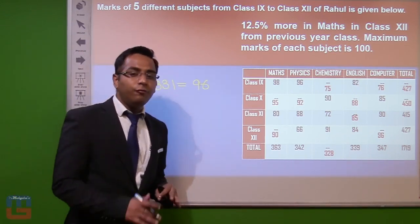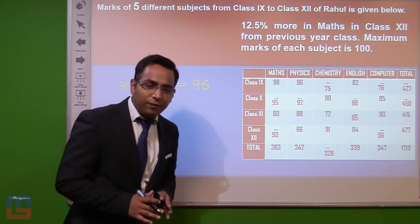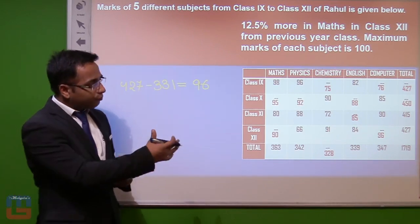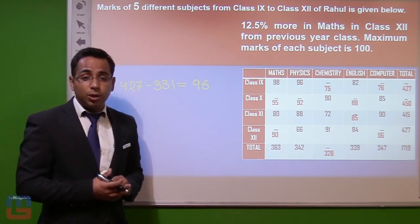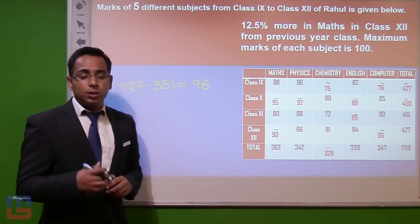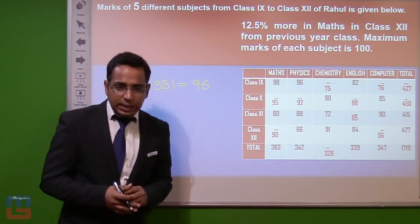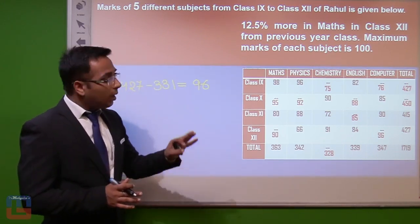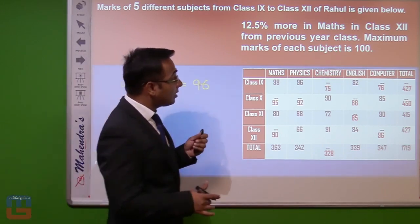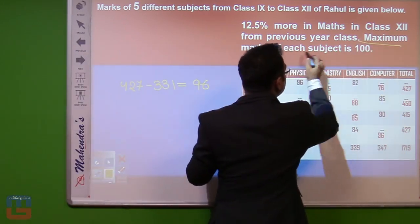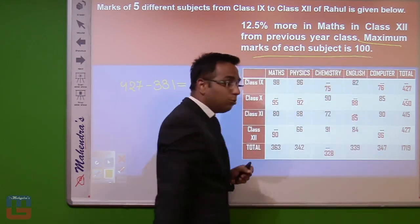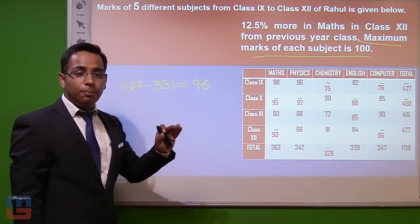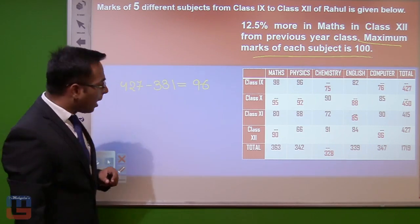The key approach is: first complete the entire chart by finding all missing values. Once we have all the data, calculations for the actual questions become very easy. Remember, one important given detail is that the maximum marks for each subject is 100 — this may be used in questions, so keep it in mind.